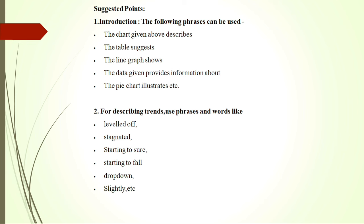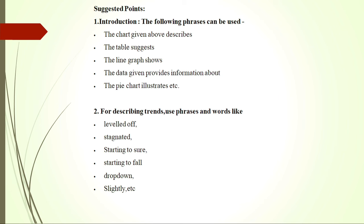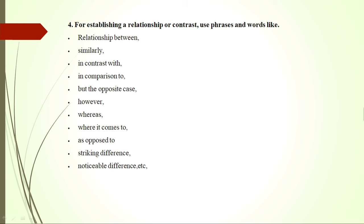For describing trends, when there is some trend — an upward trend or downward — you can write: 'it is stagnated', 'it started to fall', 'drop down slightly', etc. These phrases can be used. When describing quantities, you can write: '48% of', 'one third of', 'nearly one fourth of' — these are words and phrases that help you get good marks. Also: 'majority', 'on an average', 'twice as much', 'almost equal', 'the lightest', 'the lowest', 'very close to 2 percent', 'approximately 5 percent', or 'just under 3 percent'. Such words should be used when describing quantities.